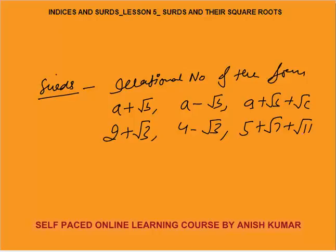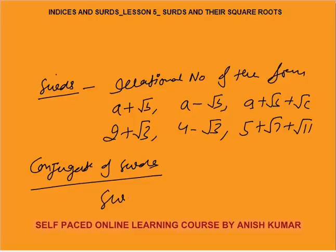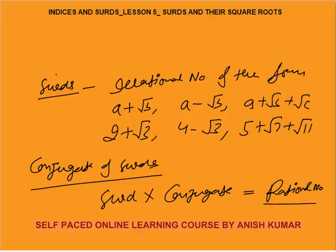In this lesson, I will discuss how to simplify the surds. One term is called the conjugate of surds. Conjugate simply means that when you multiply a surd by its conjugate, the product should come out as a rational number.